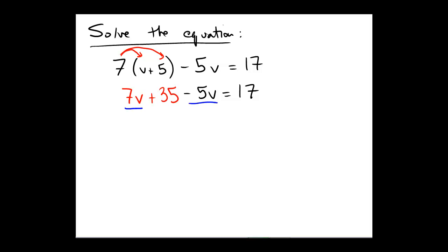7v minus 5v yields 2v, and then we still have this plus 35, so I'm going to just rewrite that piece, and then we still have that this equals 17.